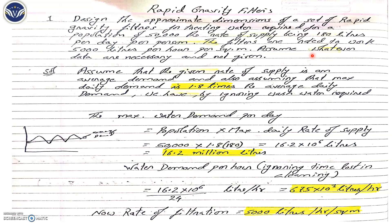So based on this you need to design a rapid sand gravity filter. The given data: population is 50,000; rate of filtration is 5,000 liters per hour per square meter; per-capita demand is 180 liters per day per person.